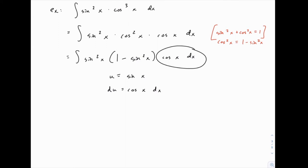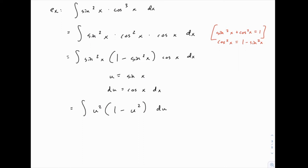Here's our du. Everything else is in terms of sine and can be replaced with u. So we'll have u squared times one minus u squared times du. The simplest way to integrate this is to distribute, giving us u squared minus u to the fourth du. We can integrate that term by term, getting one-third u to the third minus one-fifth u to the fifth plus C.